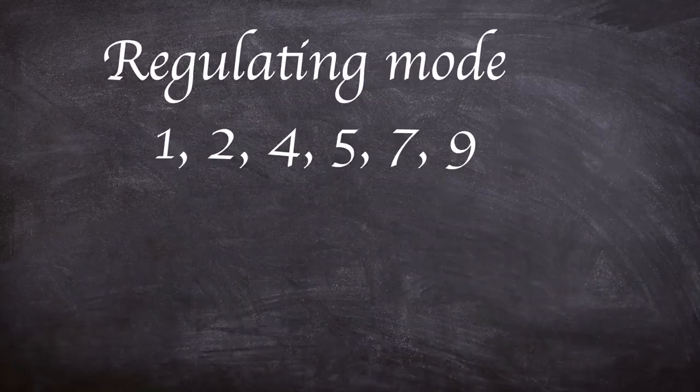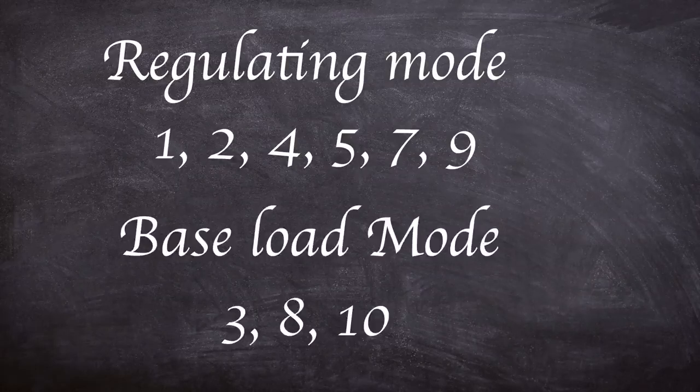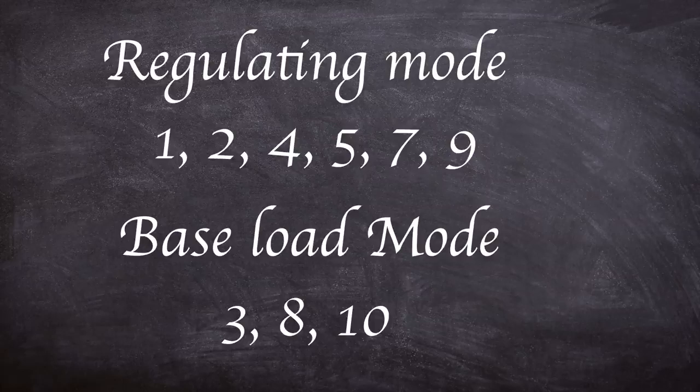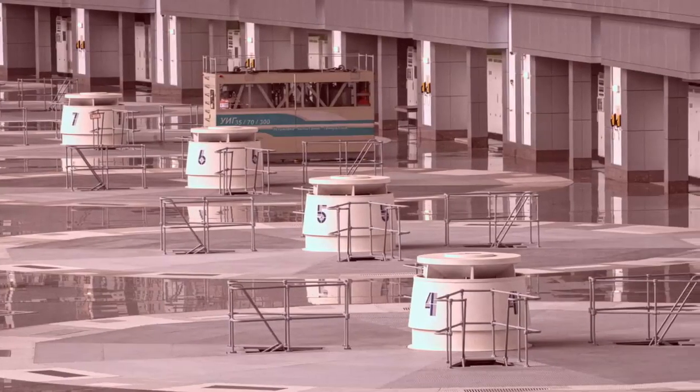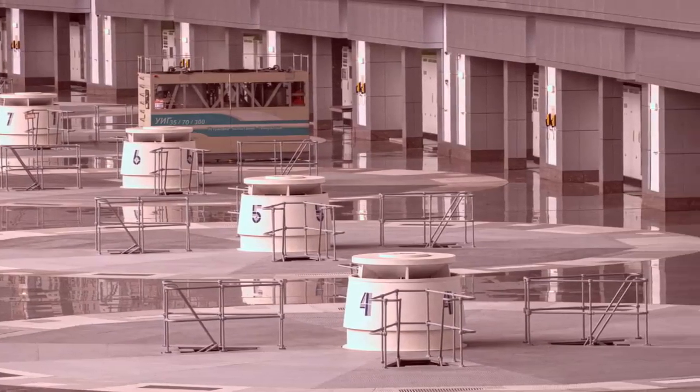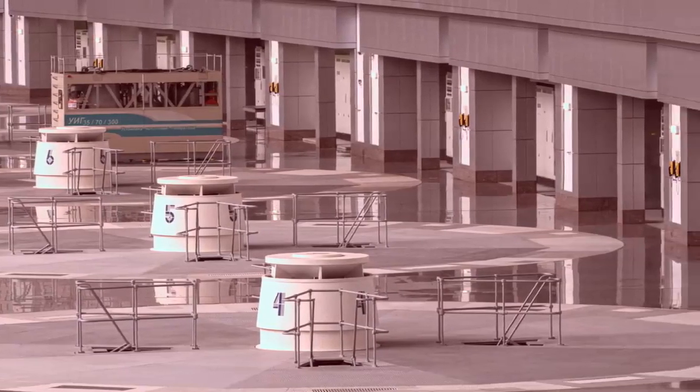With units 1, 2, 3, 4, 5, 7, and 9 operating in regulating mode, with units 3, 8, and 10 generating base load power. Unit 6 was shut down for maintenance work, and as such, more personnel than usual were in the turbine hall. Normally around 12 people staffed the vast building, but on that day over 100 milled around the hall undertaking repair work.